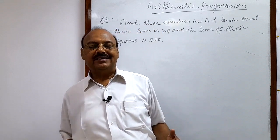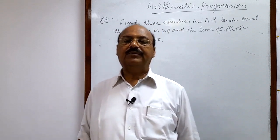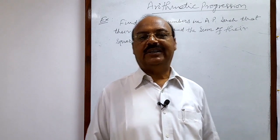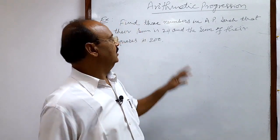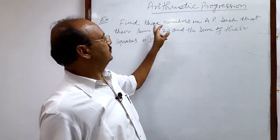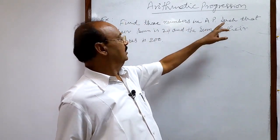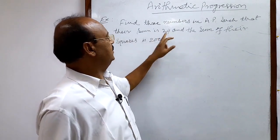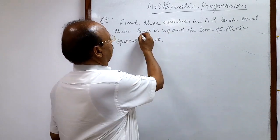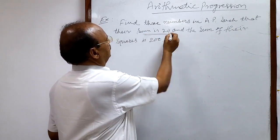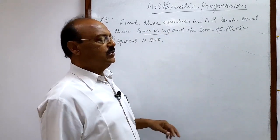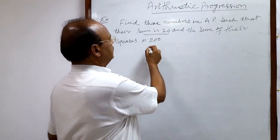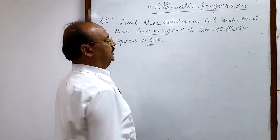Here we will see a very interesting and simple question from the topic arithmetic progression. The question is: find 3 numbers in AP such that their sum is 24, and the sum of their squares is 200.